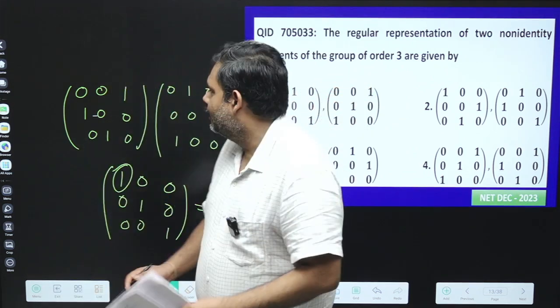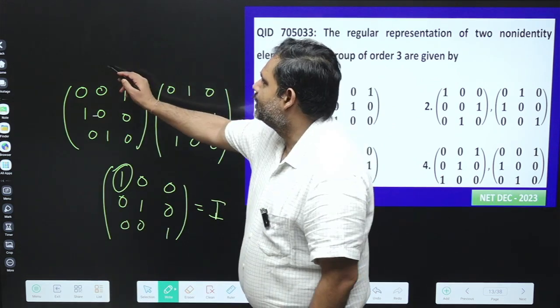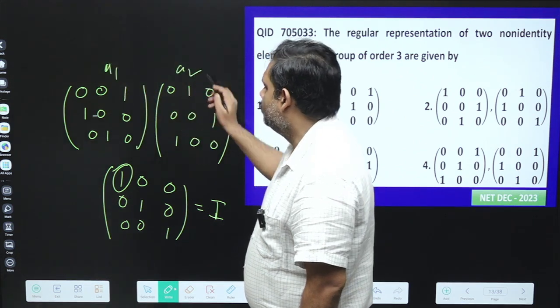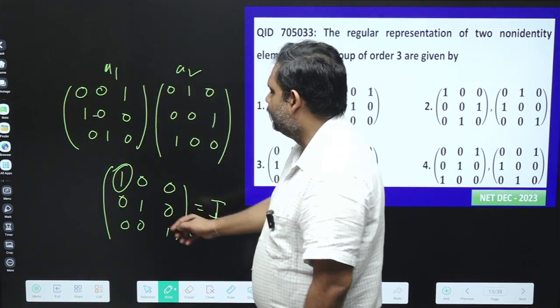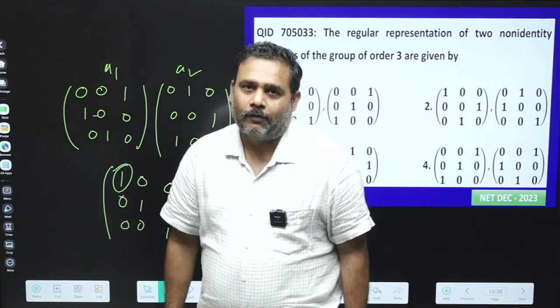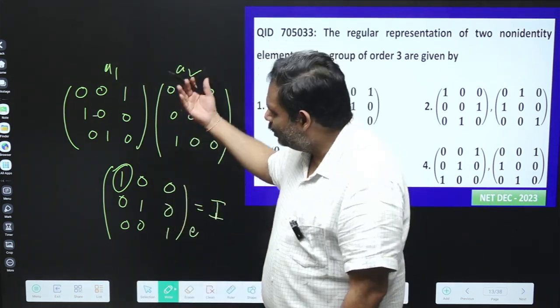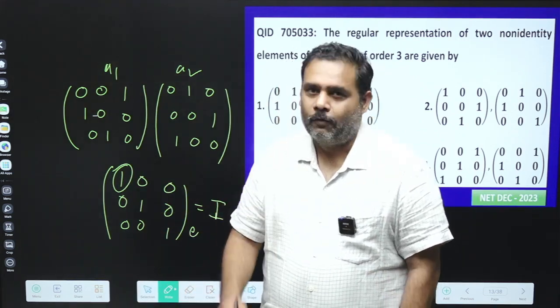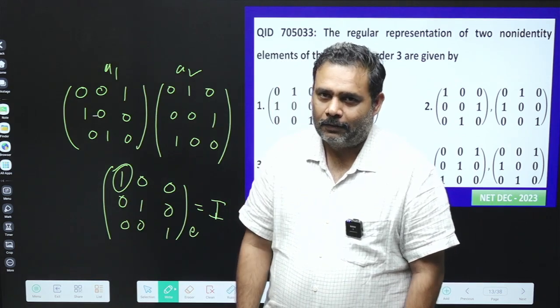So yes, the three elements will be, this is your first element, you can say this is your A1, this is your A2, and this will be your identity element. And they are just forming the group. So you can also check whether they are abelian or non-abelian. So you can just go for this particular calculation. Thank you.